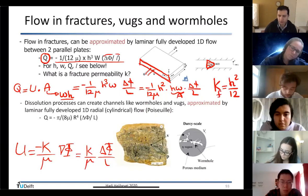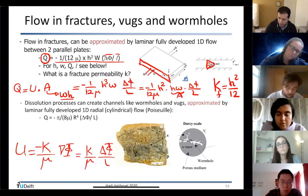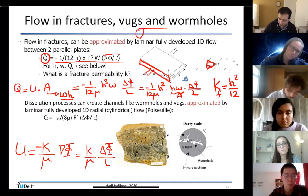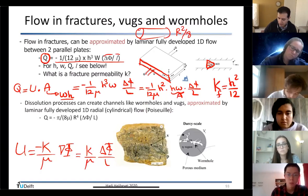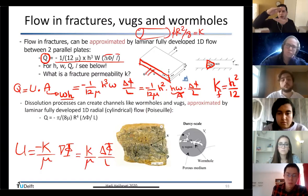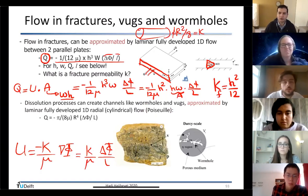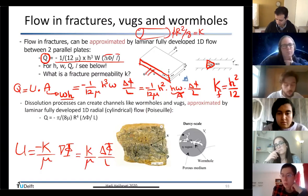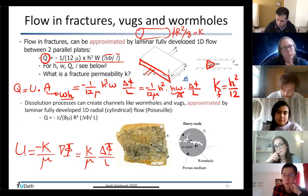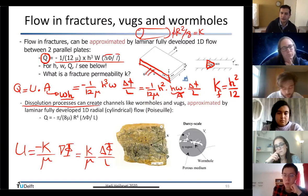For circular tubes: k = R²/8 (times porosity for a bundle). For fractures modeled as parallel plates: k = h²/12. There are also reactive transport processes creating wormholes — holes that can be treated similarly to tubes, giving k ≈ R²/8 for a single wormhole (porosity ≈ 1).